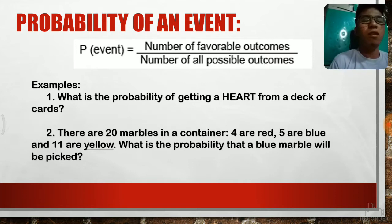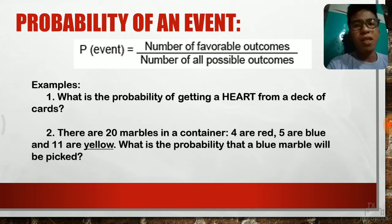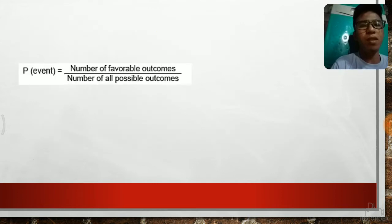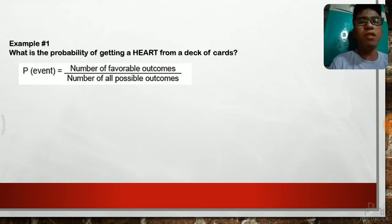So I have here two examples that we'll solve, and then later on if we can, we'll add one more. So let's start solving this one. The probability of an event equals the number of favorable outcomes all over the number of all possible outcomes. That is our formula. Let's start solving for the first example.